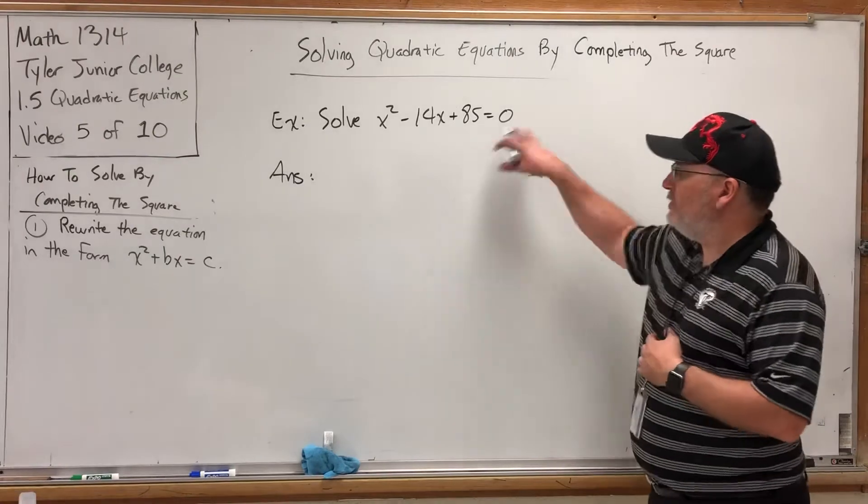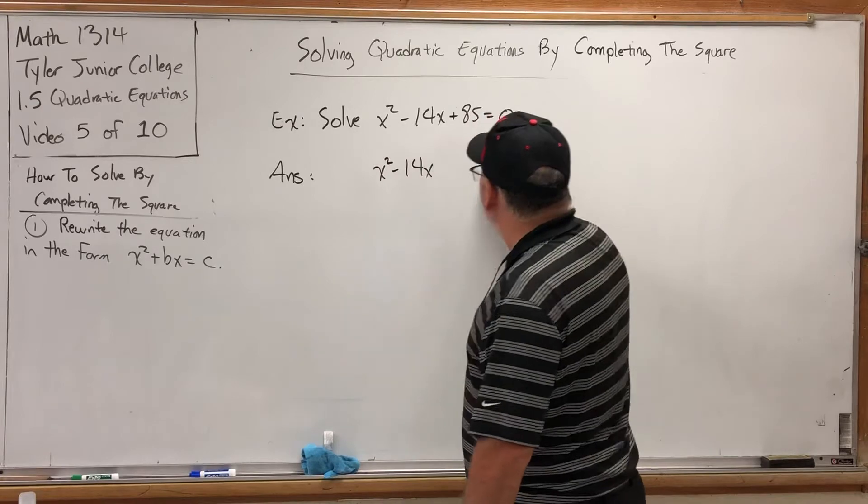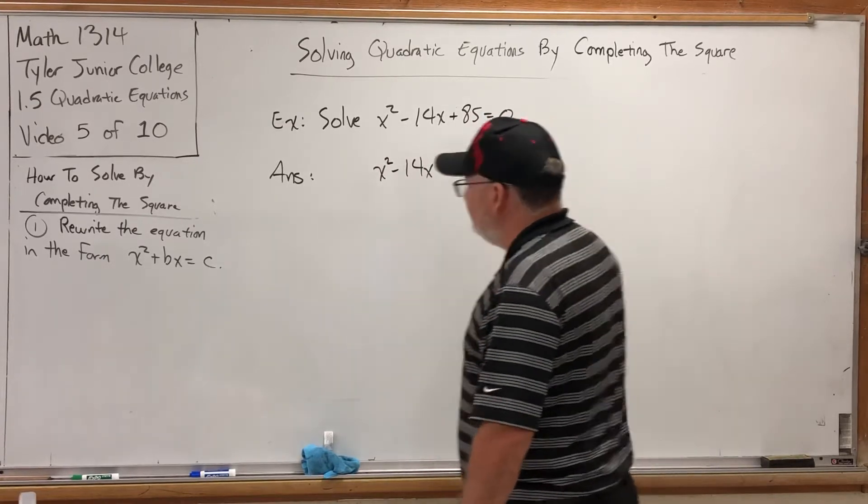So, what would we have to do here to get this ready? Well, the constant term needs to move. So, the 85 needs to move. And when we move it to the other side of the equation, it becomes a negative 85.